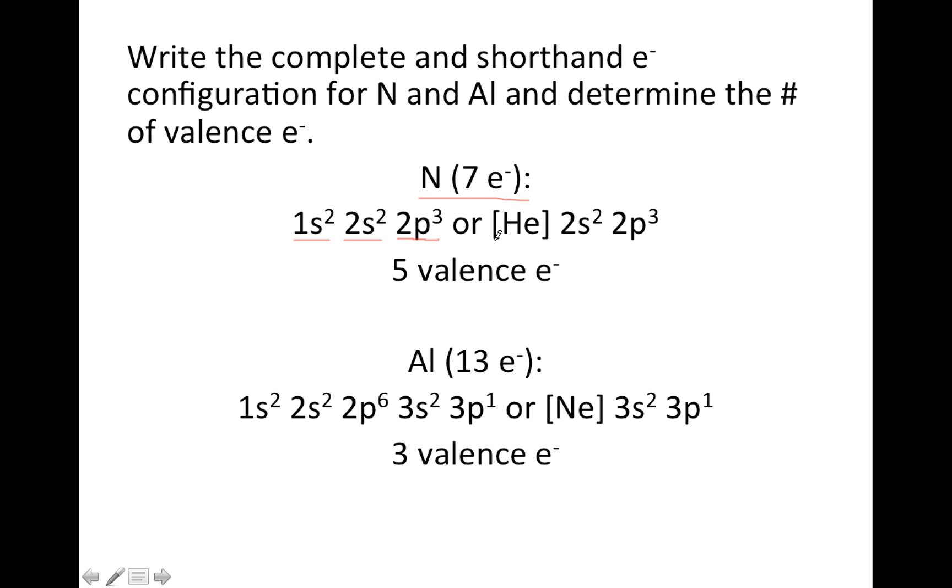And the shorthand, if you go up one row from N and all the way to the right, the noble gas there is helium. That's 2 electrons only, so we still have to do 5 more. Since nitrogen's in the second row, we start with 2s. That fits 2 electrons, and then the 2p, we have 3 more to give us our total of 7 electrons.